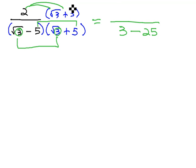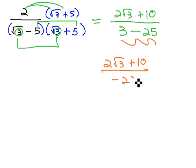We also distribute in the numerator, giving us 2 root 3 plus 10, and then all that's left is some simple simplifying. Subtracting in the denominator, 2 root 3 plus 10 over negative 22.